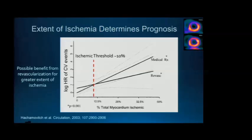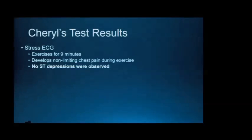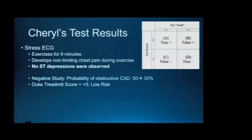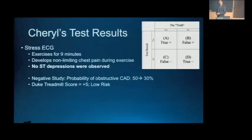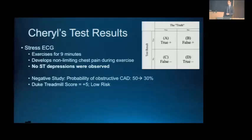Returning to the case of Cheryl: she underwent a stress ECG, exercised for nine minutes, developed non-limiting chest pain, and had no ST-segment deviations — a negative study. Starting with a 50% pre-test probability and a test sensitivity of 68%, her post-test probability of having obstructive coronary disease would be 30%. The stress ECG didn't move the needle much diagnostically, but we do get accurate prognosis from her low-risk score.